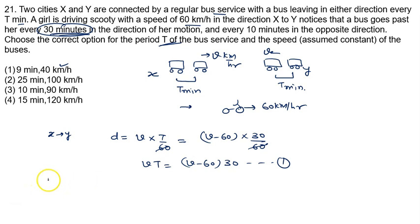Now when buses come from the opposite direction, Y to X, the left hand side is the same. Now look at the right hand side. V minus 60 into 30 is given by v plus 60 into 10. This is equation number 2.